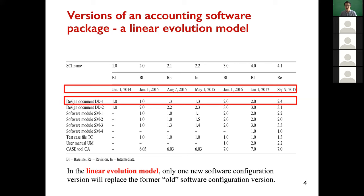We call it a linear evolution model because only one version replaces the older version of the same document, code, or other artifact. We can also see that within a whole system, different documents, code, or other artifacts have different versions.